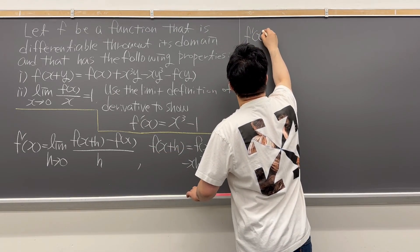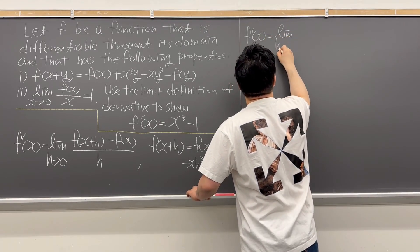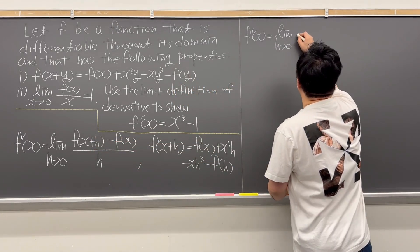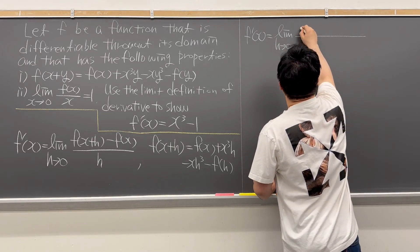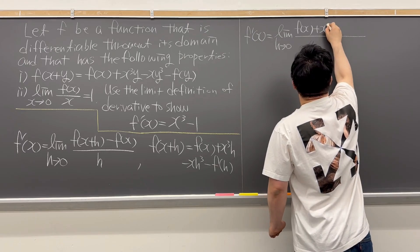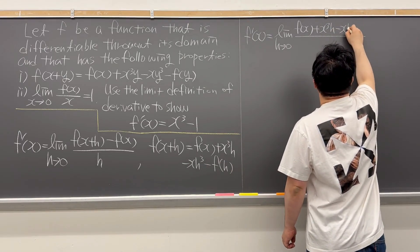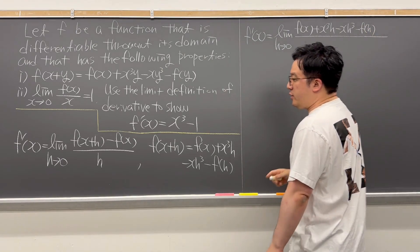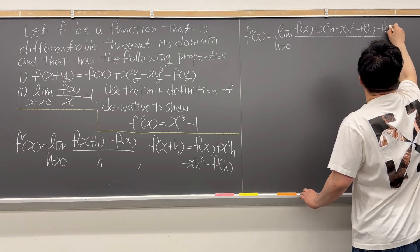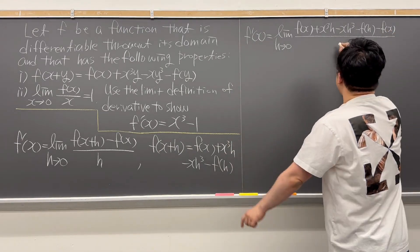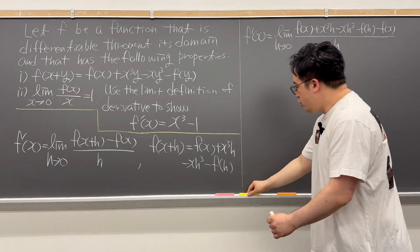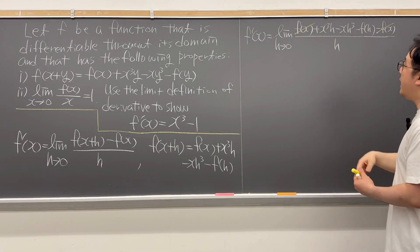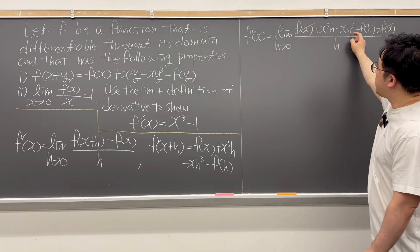So f prime of x is now equal to the limit as h is going to zero. Using the expression for the first term on the numerator, we have f of x plus x cubed h minus x h cubed minus f of h, and then we subtract f of x, giving negative f of x on the numerator, with h on the denominator. We can cancel those two terms: f of x and negative f of x. So we're left with only x cubed h minus x h cubed minus f of h.